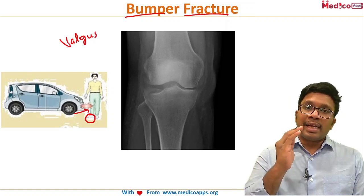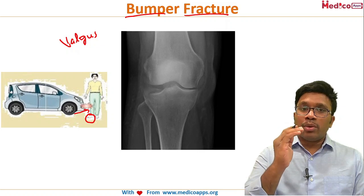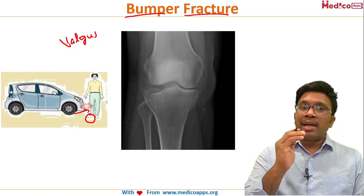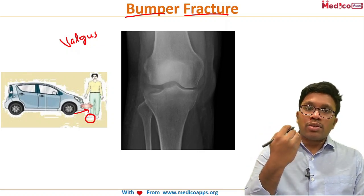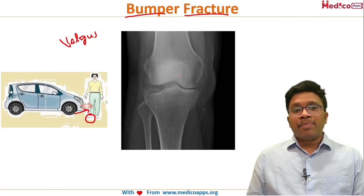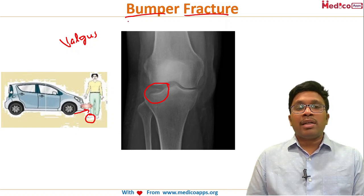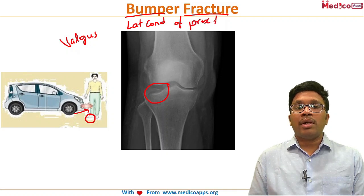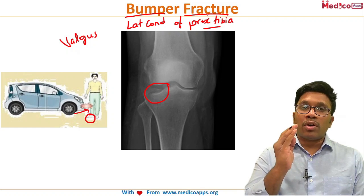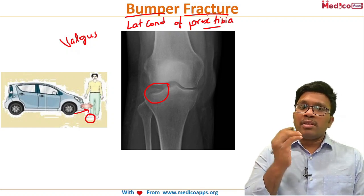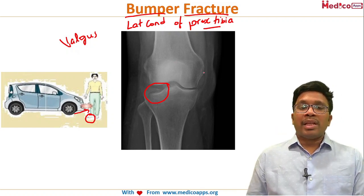With axial loading from standing and valgus force from the car bumper hitting the lateral aspect, the fracture that occurs is of the lateral condyle of the proximal tibia. This is the bumper fracture, and it can be associated with ligament injuries such as medial collateral ligament injury, depending on the extent.